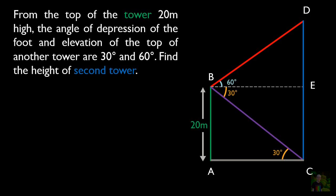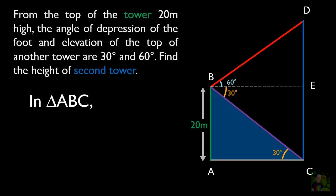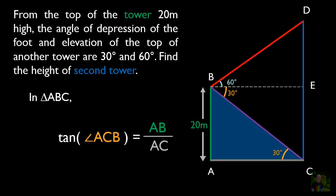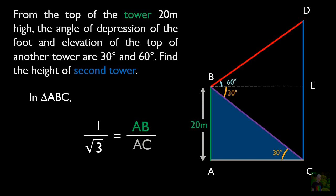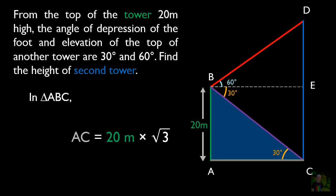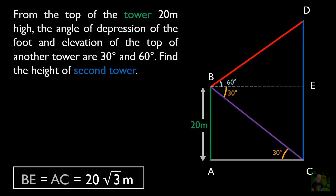In triangle ABC, tan(angle ACB) equals AB by AC. Angle ACB equals 30 degrees and tan 30 equals 1 by root 3. We substitute AB as 20 meters, and after cross-multiplying, we get AC as 20 root 3 meters. We found AC because BE equals AC, so BE equals AC equals 20 root 3 meters, which we will compare with the upper right-angled triangle.